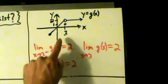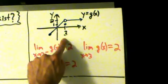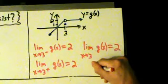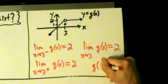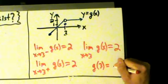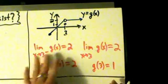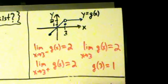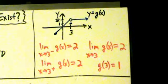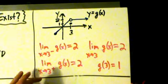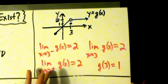Notice that when x is actually 3, y is equal to 1, so g of 3 equals 1. That's different from all these limits here, but that doesn't matter. So that's pretty much how you can tell when a limit exists — it happens if and only if the left-hand limit exists and the right-hand limit exists and they equal the same thing. Thank you.